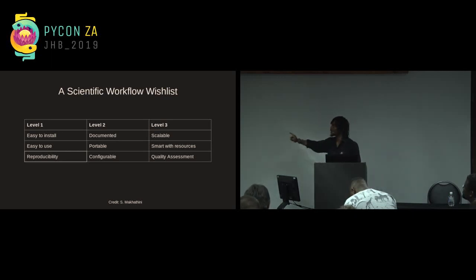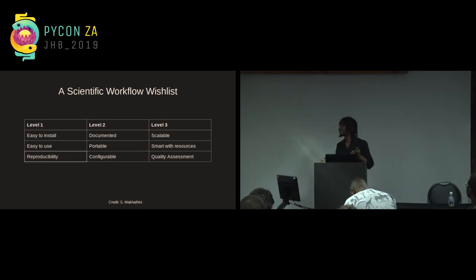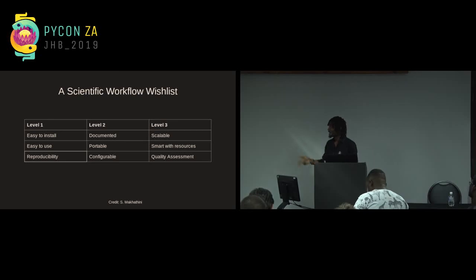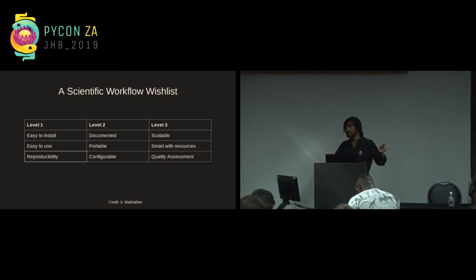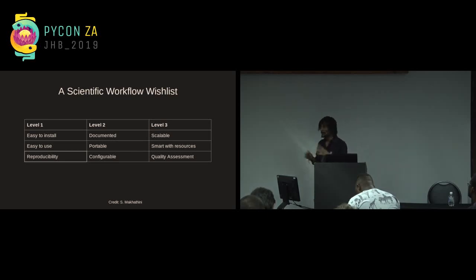In terms of level one of our wish list: even in software engineering we require that our software is easy to install. So we want these pipelines or workflows to be easy to install and easy to use. Reproducibility is also required — meaning that if you have a dataset and you got results, I could take your dataset and software, run it on my machine, and get exactly the same results.